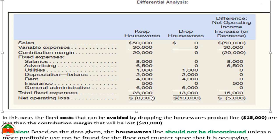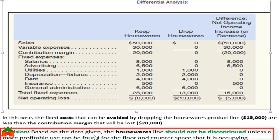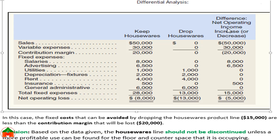Based on the differential analysis: if we keep Housewares, the loss is $8,000; but if we drop Housewares, we would lose $13,000. Dropping the product results in a higher loss, so the decision is that the Housewares line should not be discontinued unless a more profitable use can be found for the floor or counter space it is occupying. The relevant cost analysis shows that dropping the product would cost us the $5,000 contribution, so we should keep it.